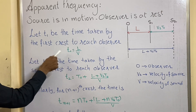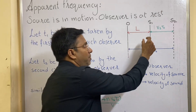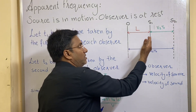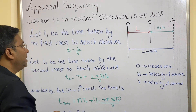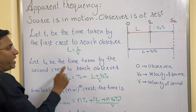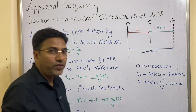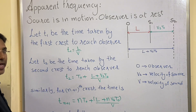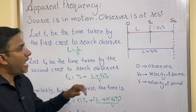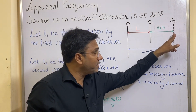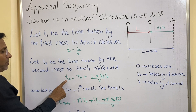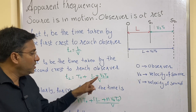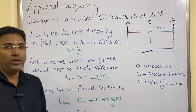Let us discuss about these formulas. When the source is emitting some waves, a crest will come out. The time taken by the first crest to reach the observer is given by the formula T1 = L/V. Similarly, time taken by the second crest to reach the observer is given by the formula T2 = T0 + (L + VsT0)/V. These formulas you have to learn.